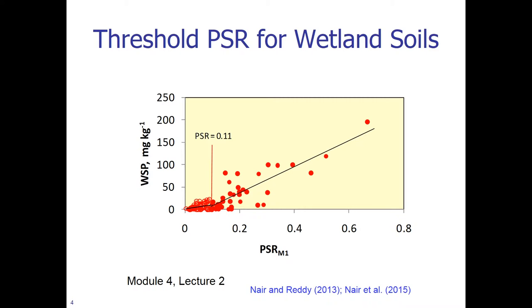We looked at the threshold PSR for wetland soils. We noticed that the change in the slope of the curve occurred at about the same point as that of the uplands. That is, the P saturation ratio is 0.1, or close to 0.1, and for all practical purposes 0.1 can be used as the threshold PSR.